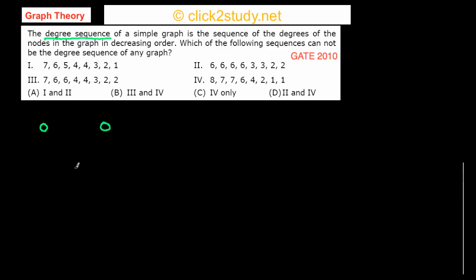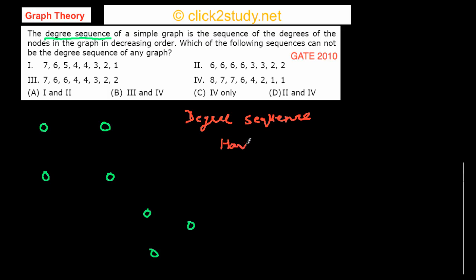I'm going to draw a simple graph of my choice and explain what the degree sequence is. We are going to study degree sequence first, and then we are going to study a very important theorem called the Havel-Hakimi theorem, which is related to the degree sequence of a graph.